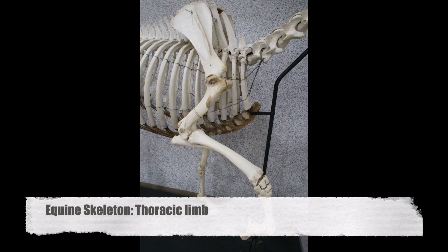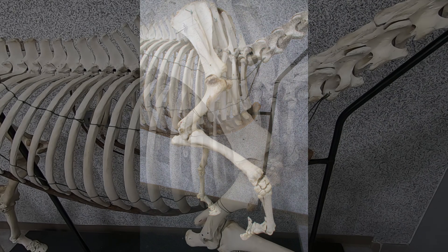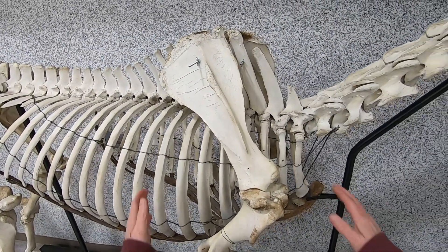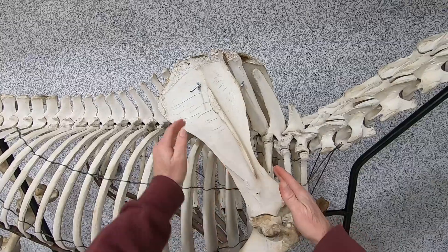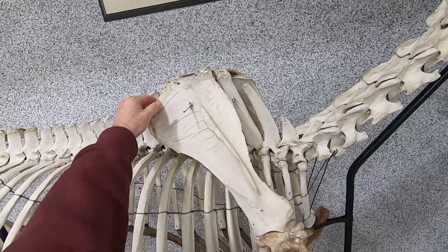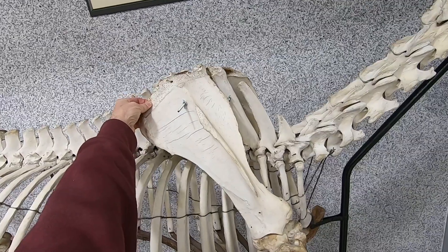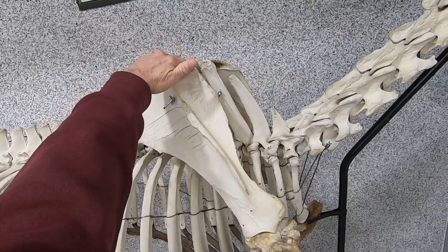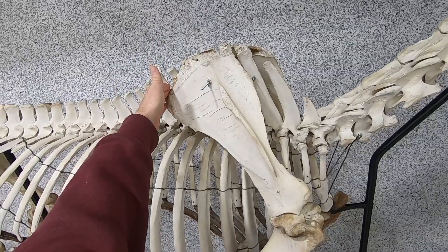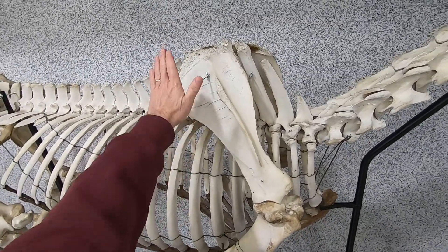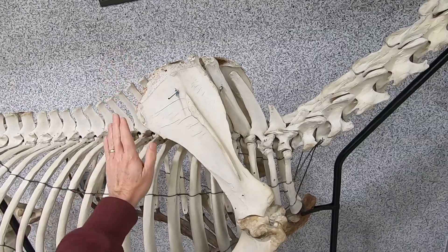Let us now take a journey down the equine thoracic limb looking at the skeleton. We're going to start out looking at the scapula. Notice up here there's this dorsal region — it usually cuts off right here. This is a little bit ossified; there's a cartilage portion here which is the cartilage of the scapula, kind of extending the length of the scapula and keeping it a little bit flexible up there at the withers.